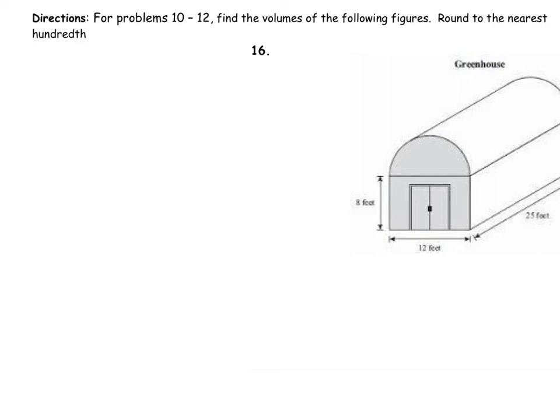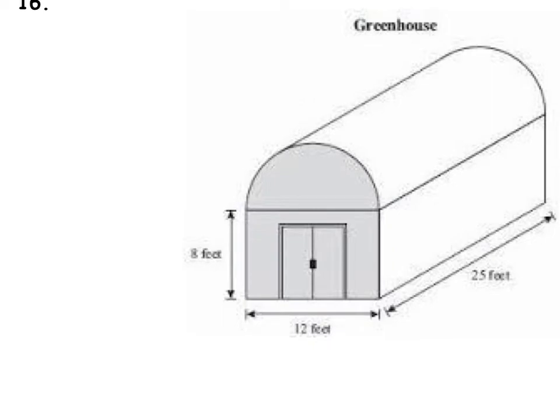We must find the volume of this figure and round to the nearest hundredth. Okay, so there's a greenhouse. Did you guys see all the numbers on your paper? Did they show up all right? So we got 8, 12, and 25.